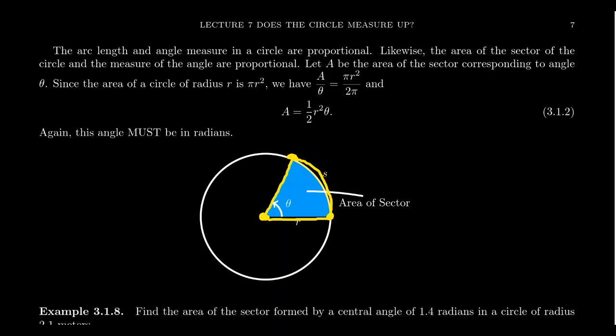And again, we're going to use a proportionality argument to find this formula. Because the idea is if you use a much larger angle, the area is going to be larger, and it's going to be proportional using the uniformity of the circle. The larger the angle, the larger the area. So angle measure and area are going to be proportioned to each other as well.